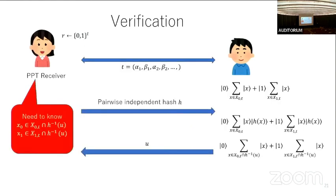In this way we can construct a proof of quantumness satisfying completeness and soundness. Unfortunately it is not efficiently verifiable, because in the KMCVY case the trapdoor function lets the verifier compute a preimage, but here we have no trapdoor, so this verifier cannot efficiently compute x0 and x1. At least by running a BPP^NP algorithm she can find both x0 and x1, which is why the verifier is inefficient.